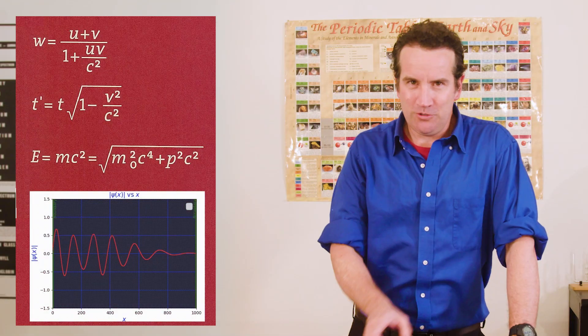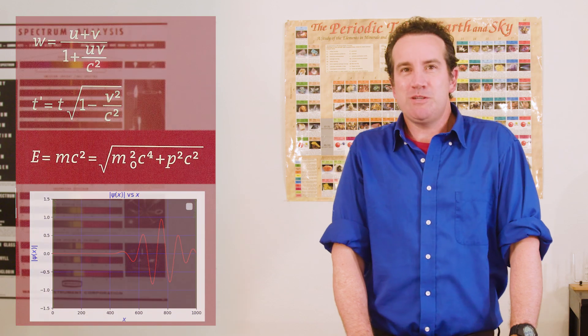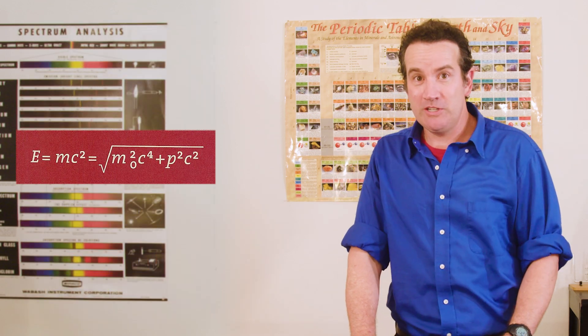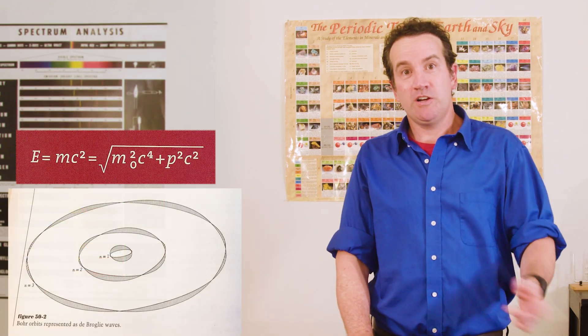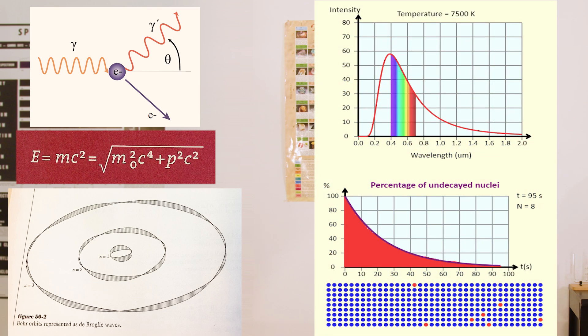Some deleted topics include relativity and quantum probability graphs, but E equals MC squared problems are still included, as well as de Broglie waves, Compton scattering, and an expansion of the details of the black body spectrum. Radioactivity and half-life problems are also on the exam.